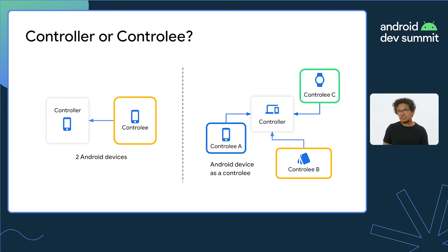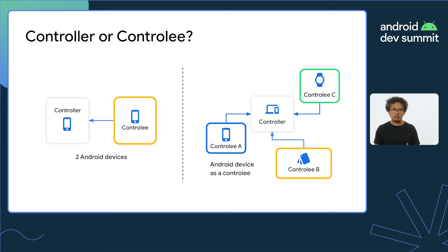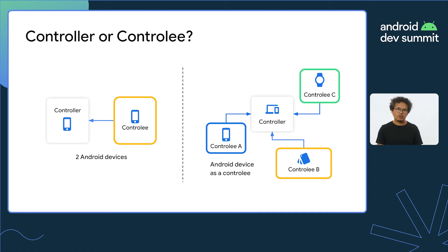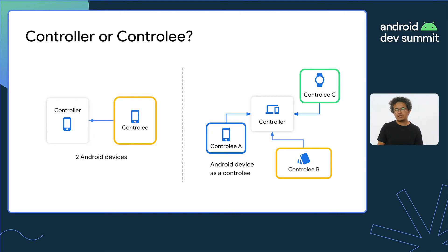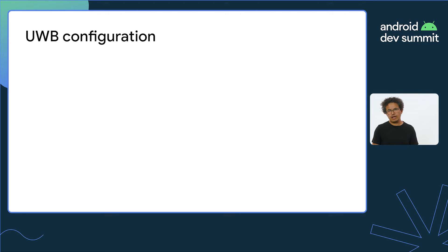A UWB ranging session happens between a controller and one or more controlees. Ranging is just a calculation of the time taken by the radio signal to travel between devices and the distance between them. A controller defines a communication channel, starts the session, and sets the parameters to be used, and the controlee device responds to the controller calls. If you plan to develop an app between two Android devices, you have to decide which one would play each role. If you're ranging from an Android phone to another IoT accessory, typically that device will be the controller.